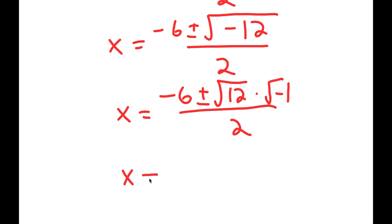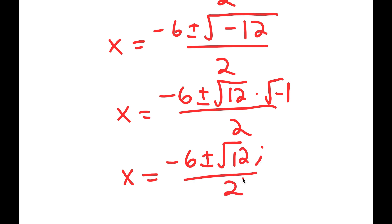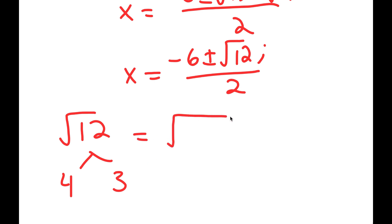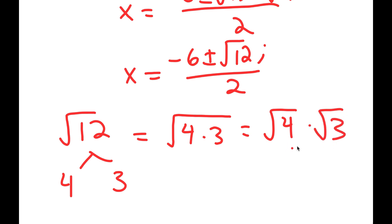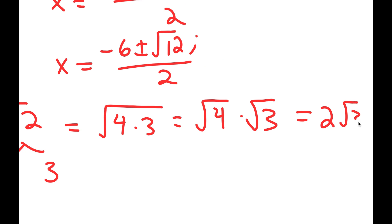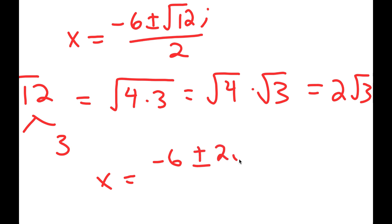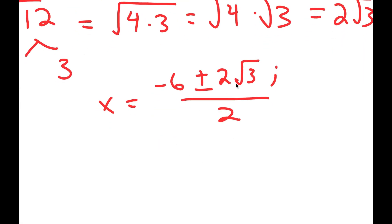So I get x is equal to negative 6 plus or minus the square root of 12 times i, over 2. Now the square root of 12 is the same thing as the square root of 4 times 3, which equals the square root of 4 times the square root of 3. The square root of 4 is 2, so this equals 2 root 3. Dividing all terms by 2, I get x is equal to negative 3 plus or minus root 3 i.